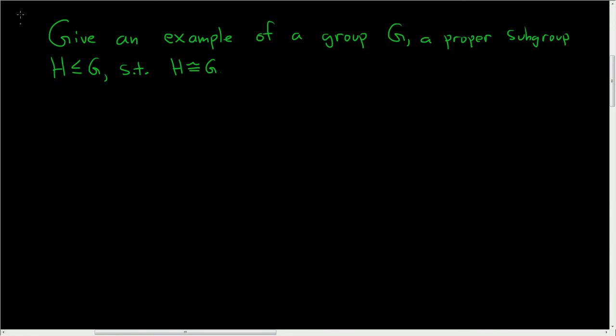So I ran into this problem in a pretty strange place. It says, give an example of a group G and a proper subgroup H of G, such that H is isomorphic to G.